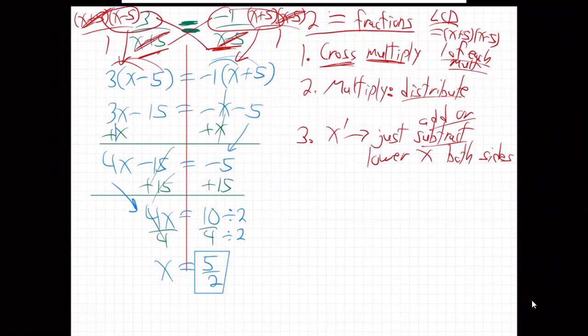When you have a problem with fractions, you need to multiply every term by the LCD over one. And what is the LCD? It's one of each denominator term multiplied together.